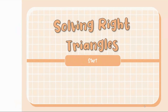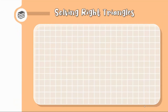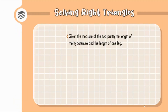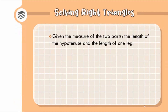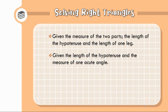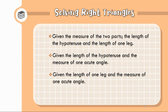For this tutorial, we will solve right triangles given the measure of two parts: the length of the hypotenuse and the length of one leg; given the length of the hypotenuse and the measure of one acute angle; given the length of one leg and the measure of one acute angle; and given the lengths of the two legs.